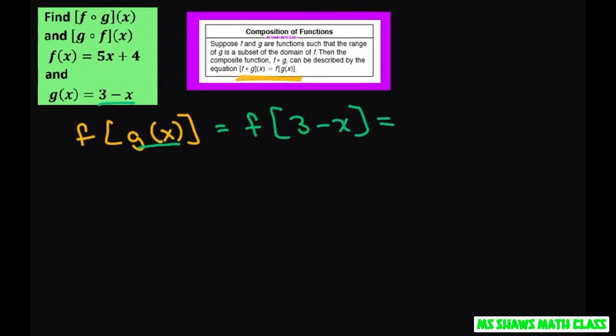Now your outer function is f, so our f(x) is 5x + 4. So you write 5(...) + 4 and input 3 - x. So this equals 15 - 5x + 4.